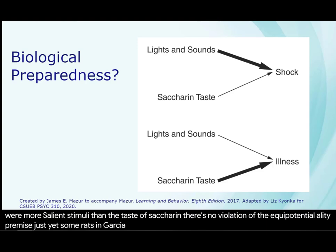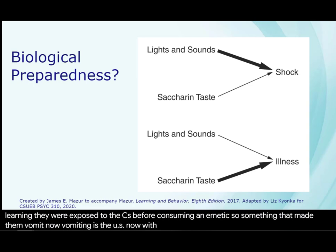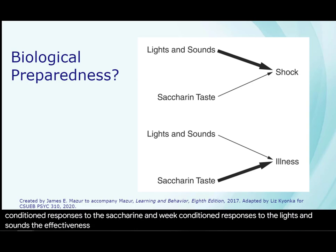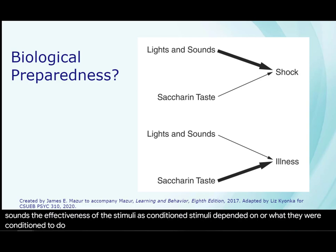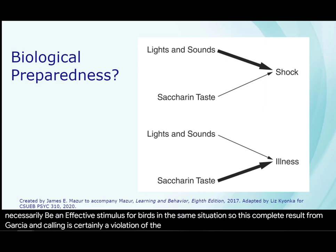Some rats in Garcia and Culling's experiment experienced taste aversion learning. They were exposed to the CS before consuming an emetic — something that made them vomit. With vomiting as the US, rats acquired strong conditioned responses to the saccharin and weak conditioned responses to the lights and sounds. The effectiveness of the stimuli as conditioned stimuli depended on the context in which they were conditioned, or what they were signaling. Moreover, an effective stimulus for rats will not necessarily be an effective stimulus for birds in the same situation. This complete result is certainly a violation of the equipotentiality premise.